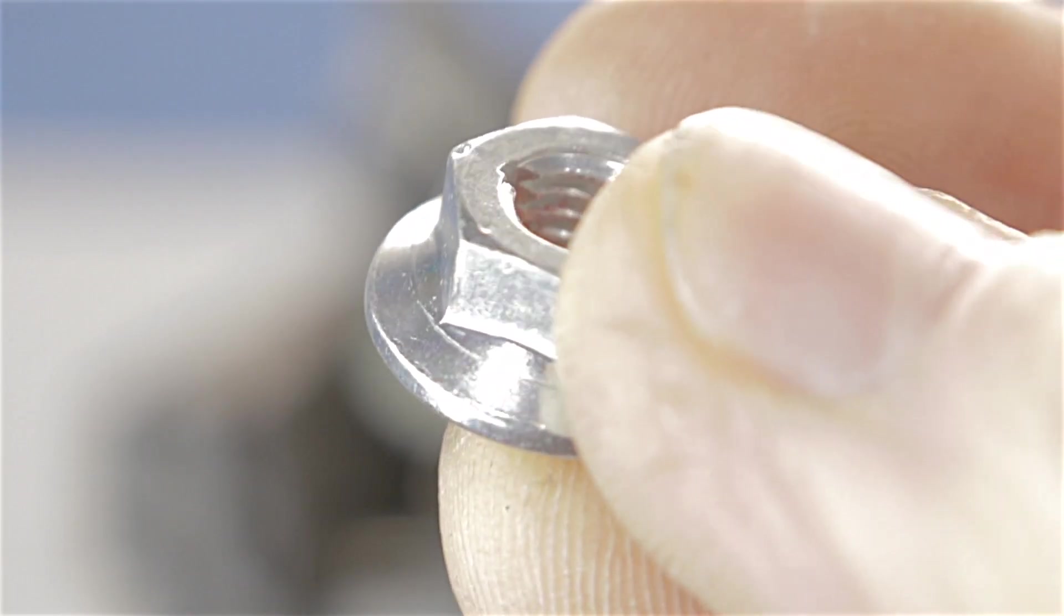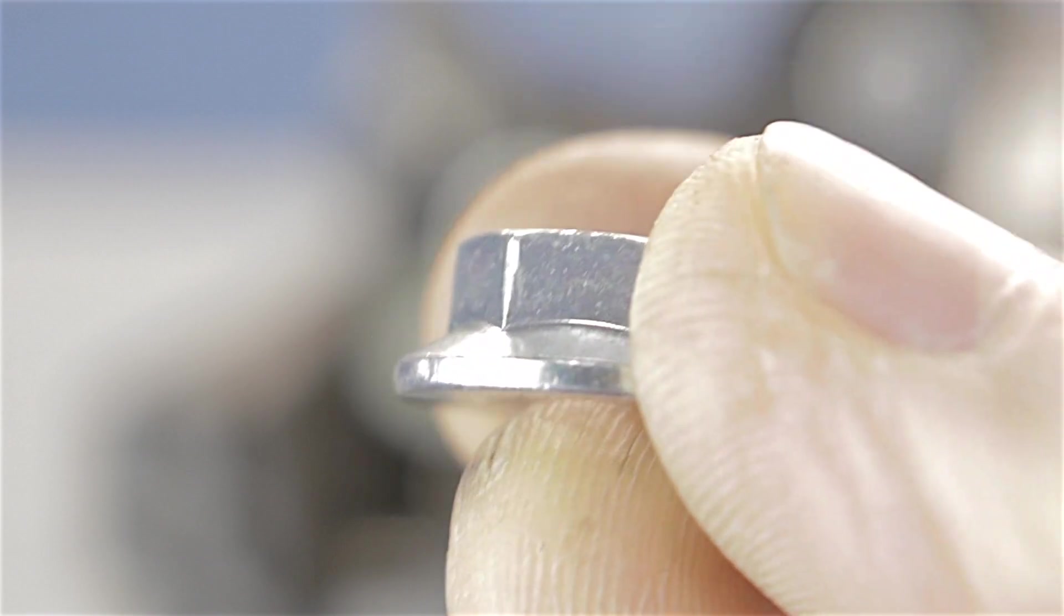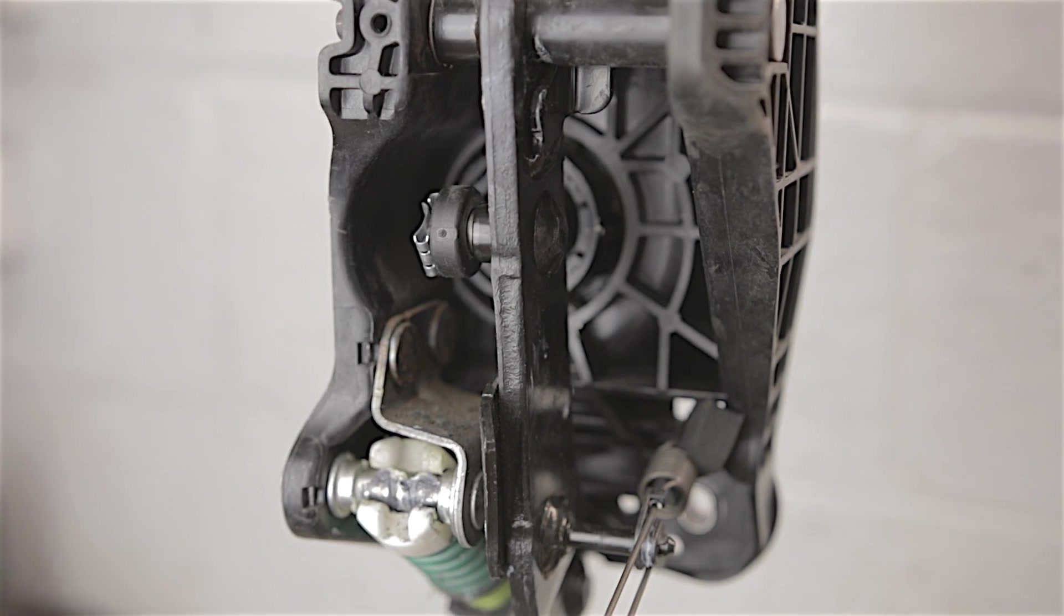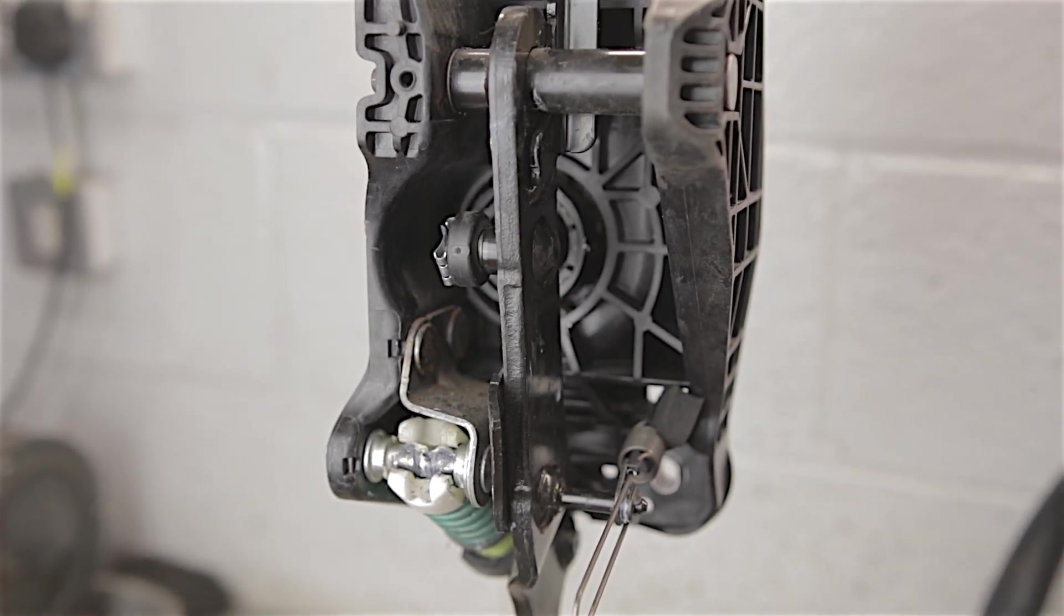And now from underneath the dashboard, all you have is three 13mm nuts. Two at the top of the pedal box and one at the bottom. And then you can just pull your pedal box forward and wriggle it out from underneath the dash.